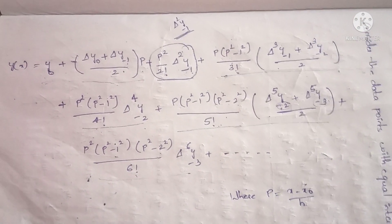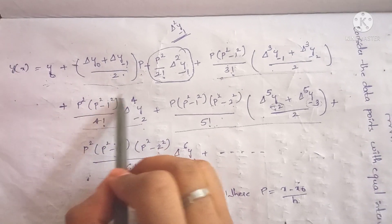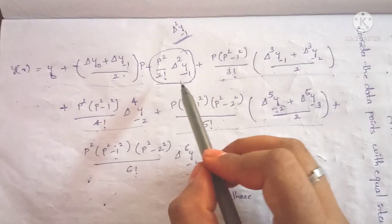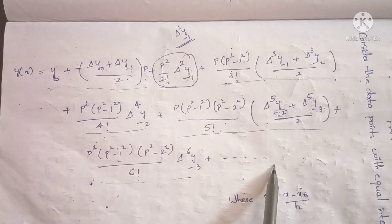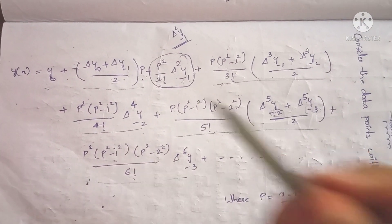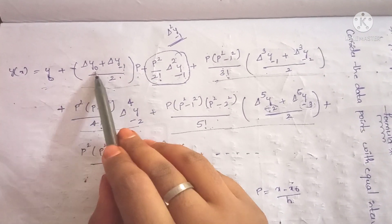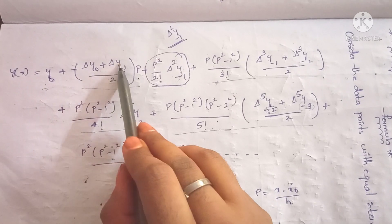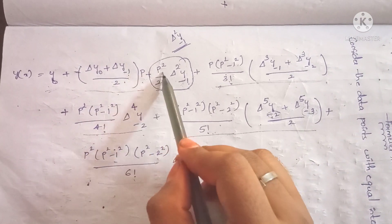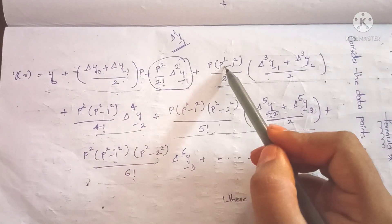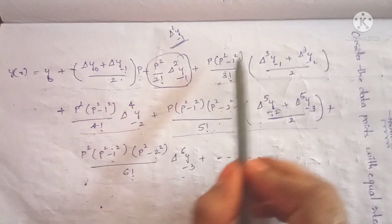In this formula, the pattern is: first y₀, then next term, then average value, then next term, then average value, and so on. The coefficients follow: p, then p², then p(p²-1²), then p²(p²-1²), alternating between single terms and average values.